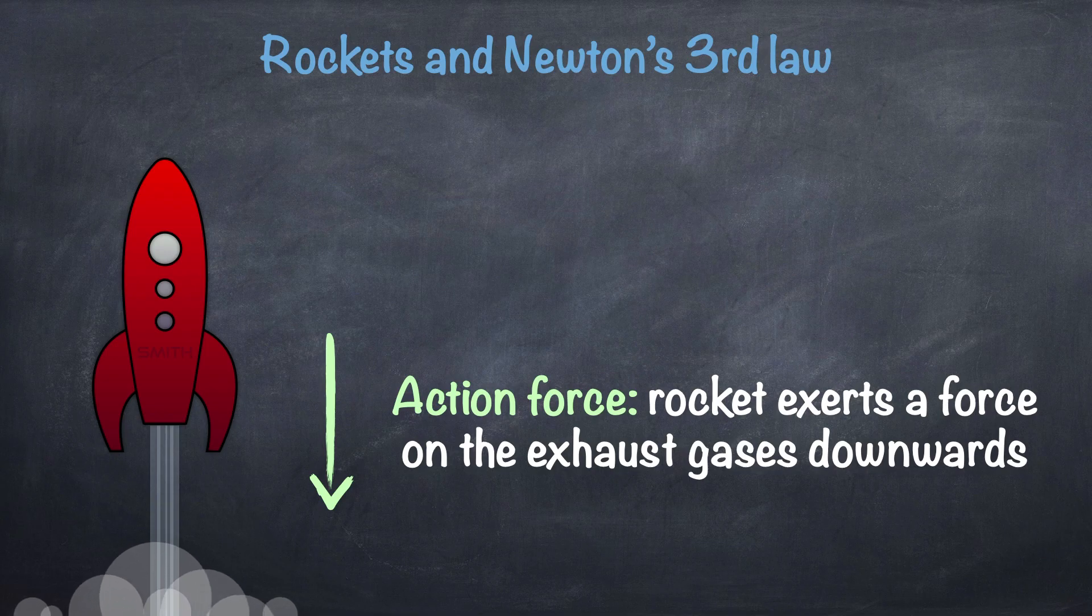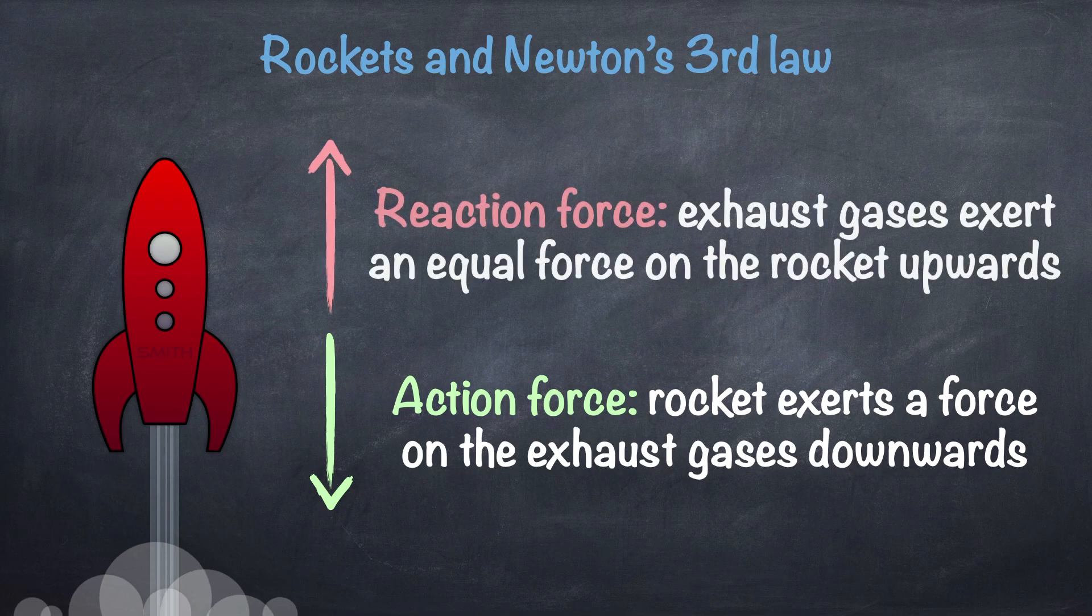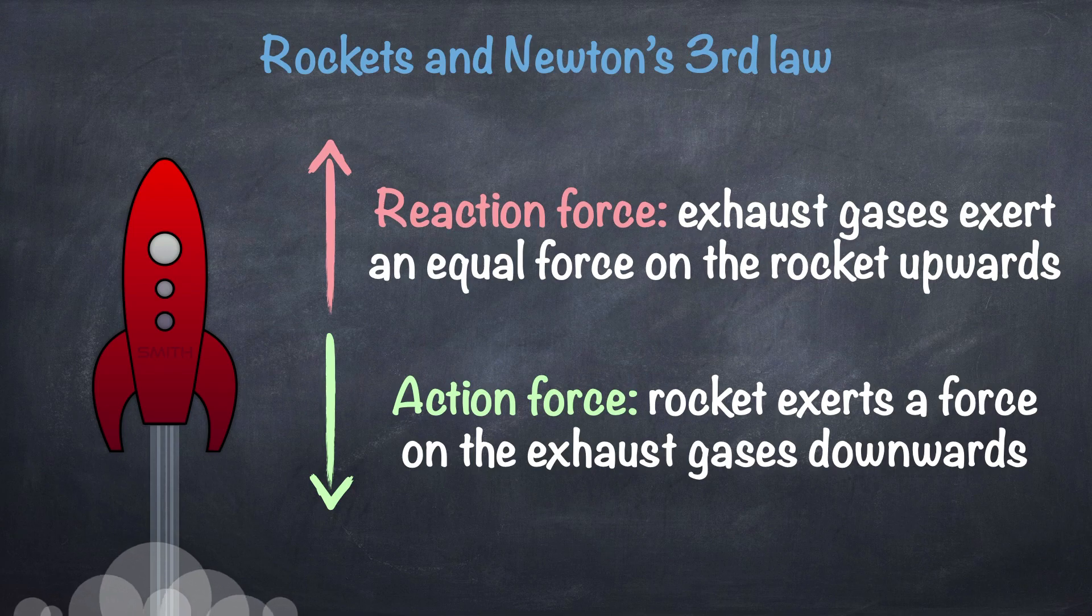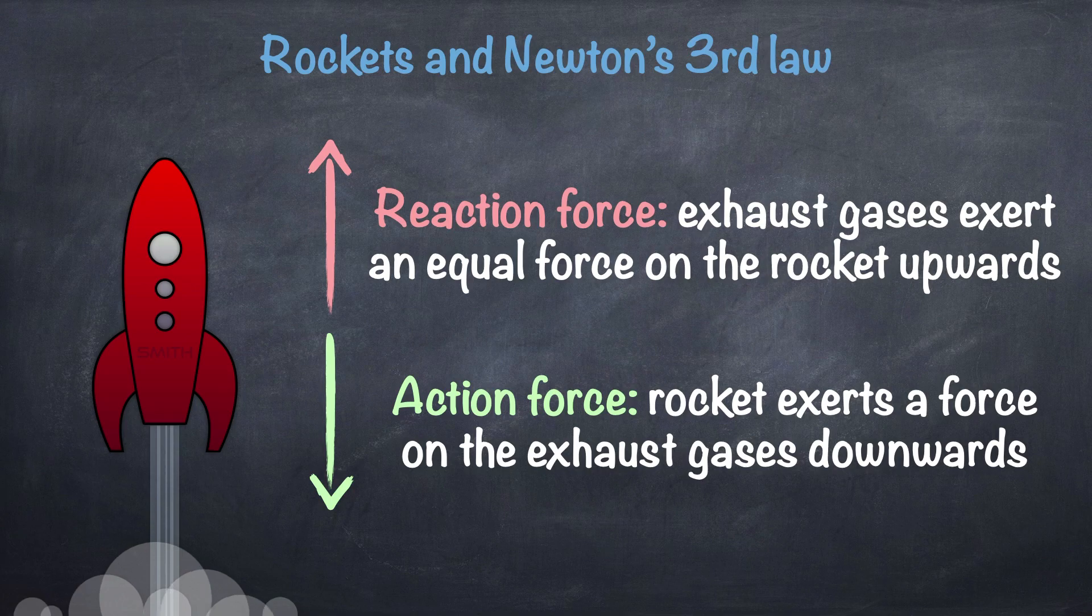So why does the rocket lift off and move upwards then? That's because of the reaction force. The exhaust gases exert an equal force on the rocket upwards. The two forces are what's known as a Newton pair in Newton's third law. And it's the reaction force that provides the thrust in the rocket.